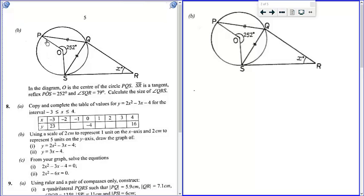Question 5B is on circle theorem where O is the center and angle SQR is 79 degrees, and this line SR is a tangent. We have been asked to calculate the size of angle QRS, which is X degrees.